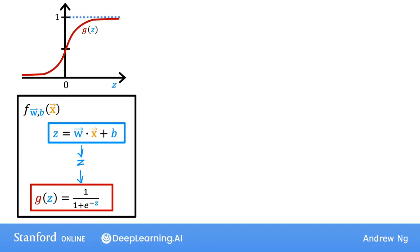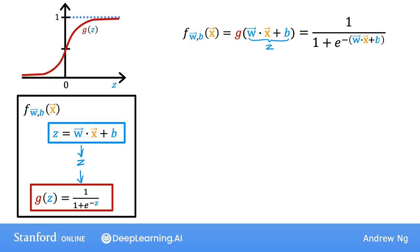Another way to write this is: f of x is equal to g, the sigmoid function — also called the logistic function — applied to w dot x plus b, where this is of course the value of z. If you take the definition of the sigmoid function and plug in the definition of z, then you find that f of x equals 1 over 1 plus e to the negative z, where z is w·x plus b. We interpret this as the probability that y is equal to 1, given x, with parameters w and b.